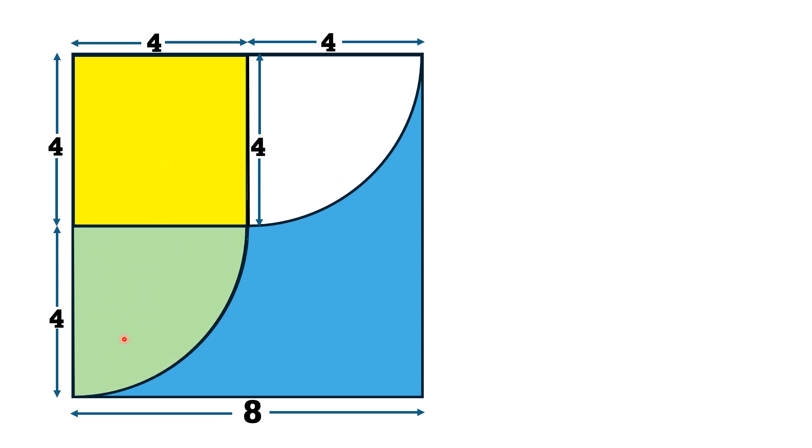This green shaded region is a quarter circle having radius 4 units and this green shaded region is also a quarter circle with radius equal to 4 units.